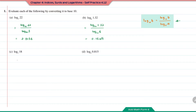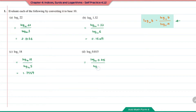Question C: log base 5 of 18. This will be log base 10 of 18 over log base 10 of 5, giving the answer of 1.7959. Question D: log base 4 of 0.815. This will be log base 10 of 0.815 over log base 10 of 4. The answer is negative 0.1476.